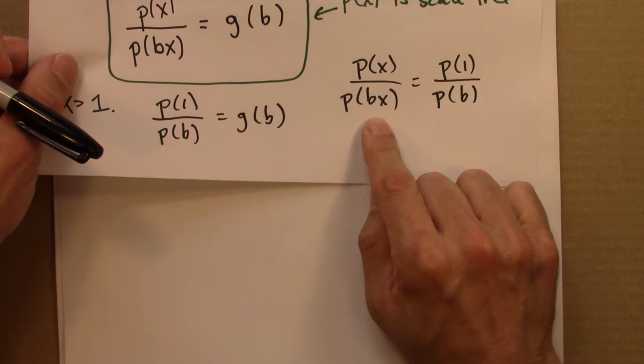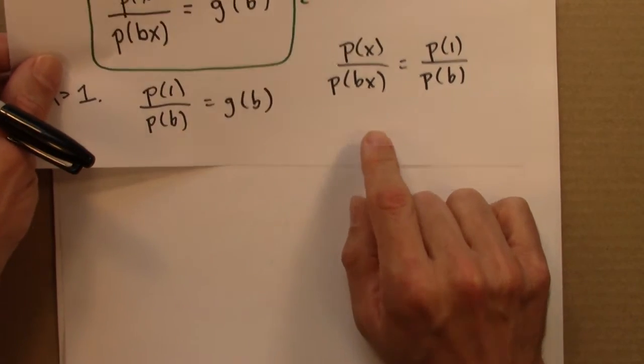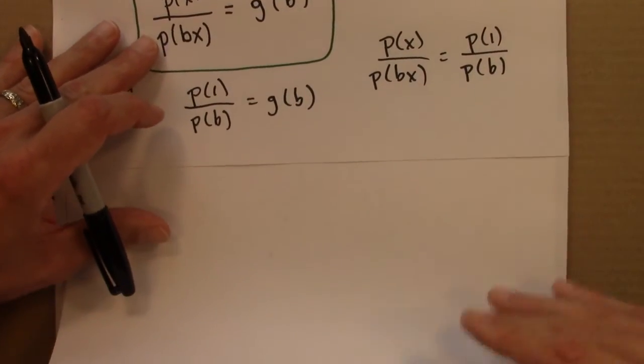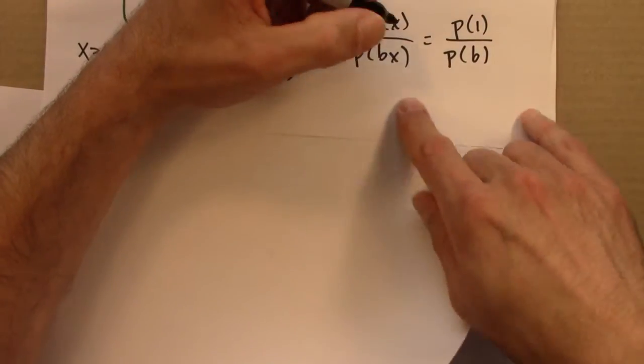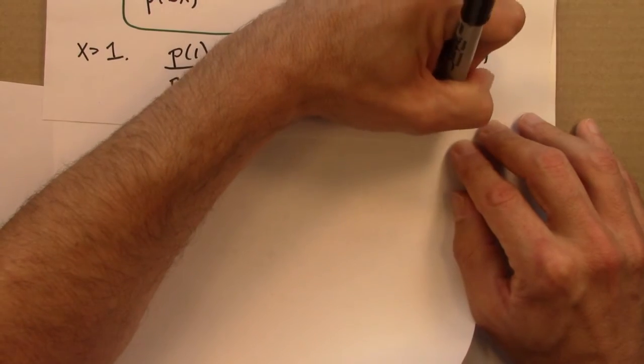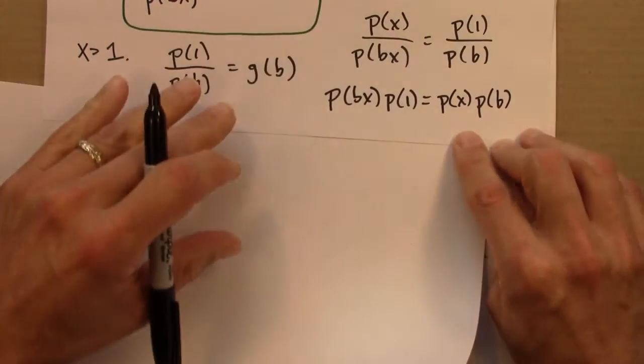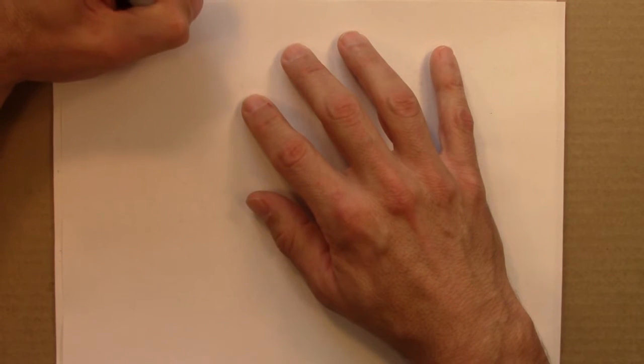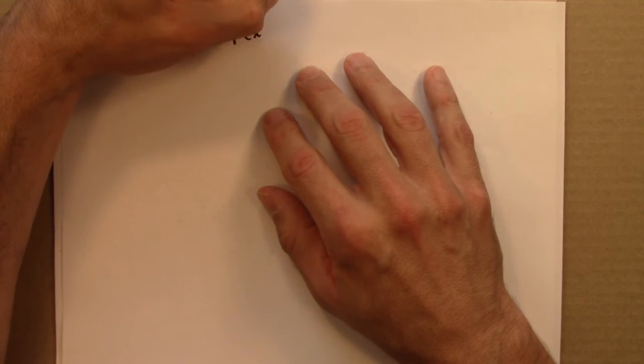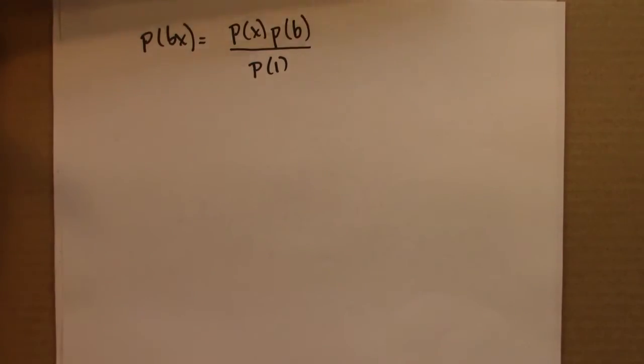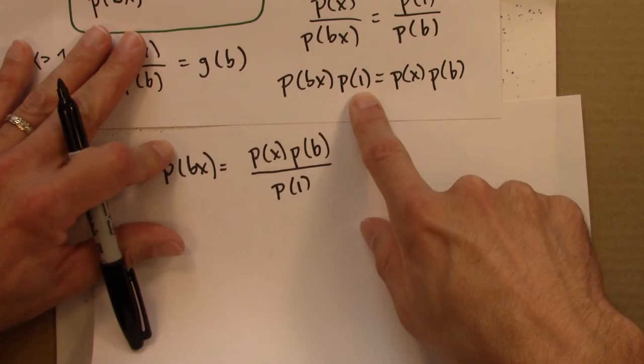So the next thing I'm going to do is I'm going to take this equation and I want to isolate P of Bx on the left. So the first thing I'll do is I'll cross multiply here. P(Bx) times P(1) equals P(x) times P(B). And then I'll divide through by P of 1 and I will get P(Bx) equals P(x) times P(B) over P(1).